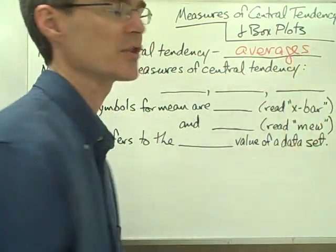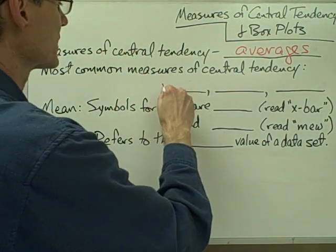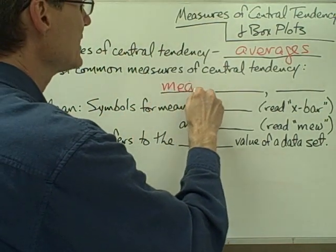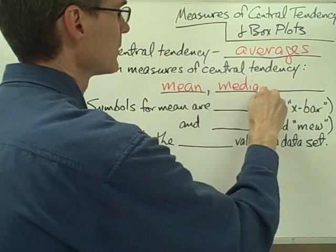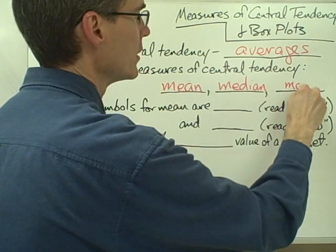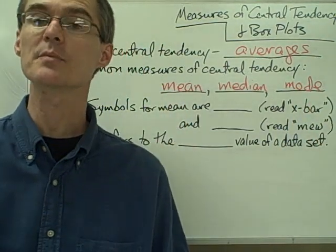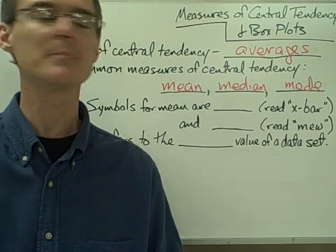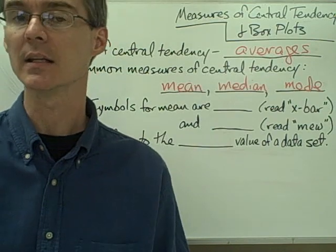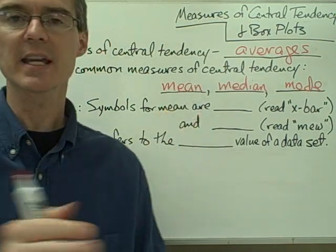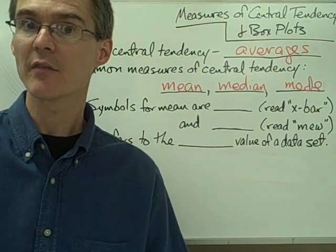Measures of central tendency are just different types of averages. The three most common measures of central tendency are called the mean, the median, and the mode. The mean is probably most familiar to most people — it's what a lot of people think of when they think of the word average. It's the one where you take however many numbers you have, add them all up, and then divide by however many numbers you have.